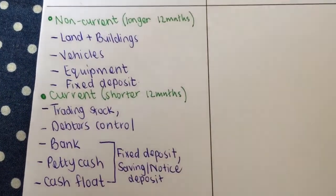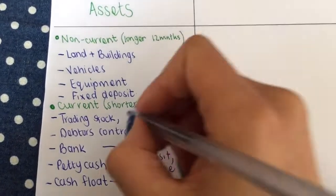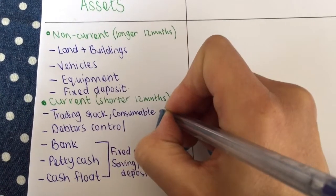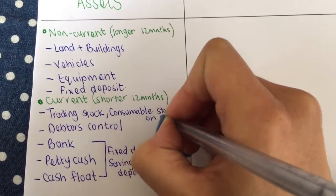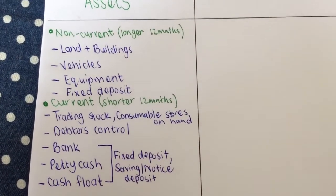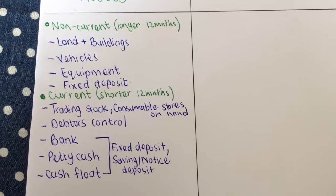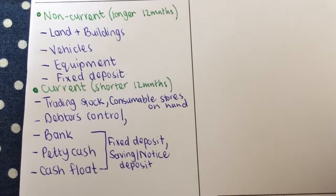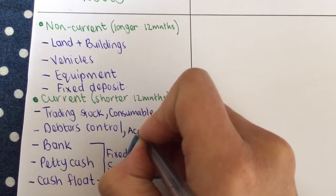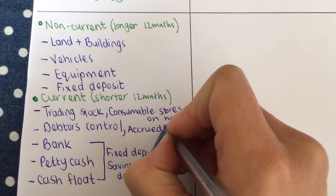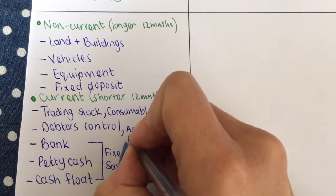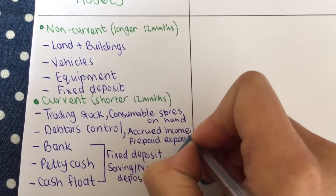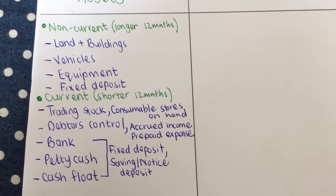Then you will also learn now going into term three of Grade 10 that we get something like consumable stores on hand. That will also be classified as a short-term asset, and then you'll also learn of two new ones that will be linked with debtors control: accrued income and prepaid expense. So those are all my assets.